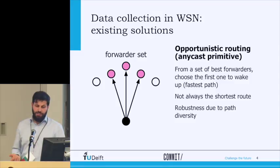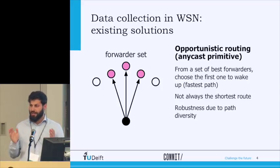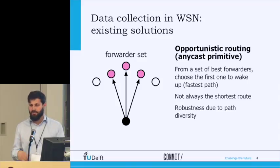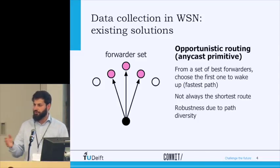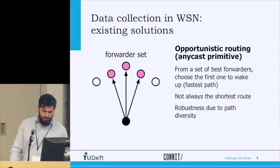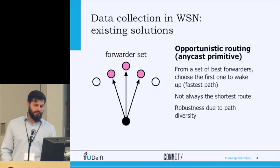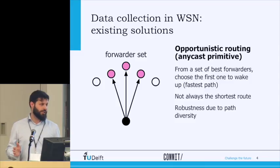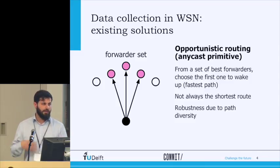On the other hand, we have opportunistic routing mechanisms that use an anycast primitive. Instead of selecting only one best forwarder, they choose a subset of neighbors as a forwarding set and forward to the first one that wakes up. This drastically reduces the rendezvous time while keeping routes quite short — though not the shortest. This reminds me of a bike courier who decides at each corner the best route, taking into account traffic and shortcuts. Another good thing about opportunistic routing is robustness through path diversity: if one path is broken, another is used, and network load is more diverse.